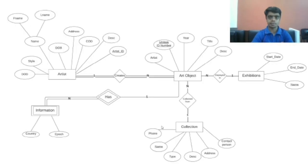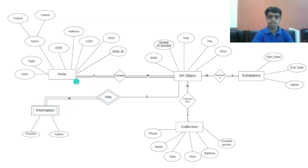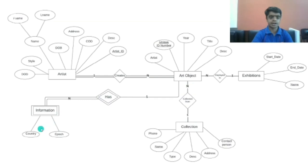Now we will see our ER diagram. In this diagram, the rectangular shape represents strong entities, the oval shape shows attributes, the double line shows total participation, the diamond shape shows the relationship between two entities, and the double rectangle is a weak entity — information is a weak entity. We establish links among these entities: artists create art objects, objects are displayed in exhibitions, objects are collected from collection, and art objects have information such as country. This is the ER diagram of the art museum.